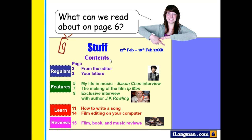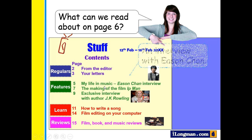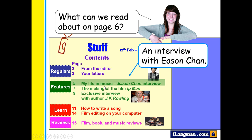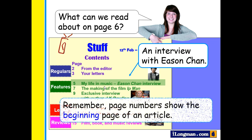What can we read about on page six? Let's take a look at the page numbers. We have 2, 3, 5, 7. We cannot find page six, but we can see that this article starts on page five and ends on page six because the next article begins on page seven. So on page six, we can read about this article. Remember, the page number shows the beginning page of an article.